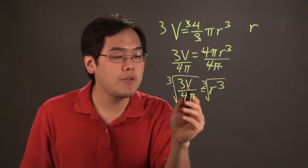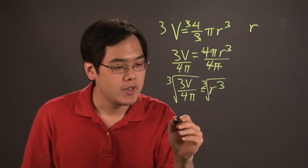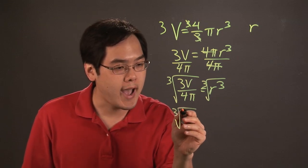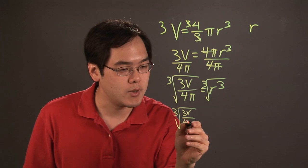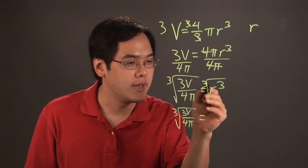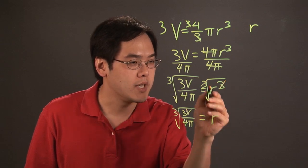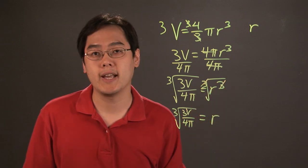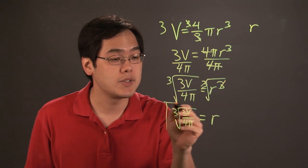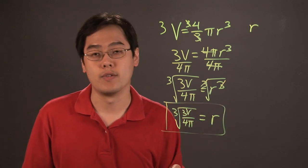Now, cube root of 3v over 4 pi, you really can't do too much with it. You may be asked to rationalize the denominator, but it really depends on the textbook and the directions. But what happens here is that the r is by itself, because the cube root and the cube are completely canceled, and so what you have here is the final answer. So r is equal to the cube root of 3v over 4 pi.